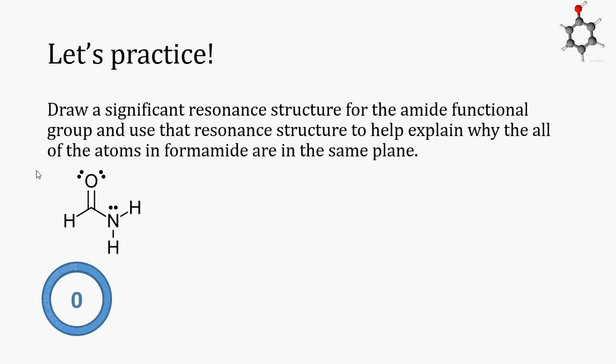First, we should get to drawing those resonance structures, like the question asked us to do. Again, we can follow the resonance patterns to draw the significant resonance structures for formamide. First, we can see that there is a carbon-oxygen double bond, and we can shift the pi bond from carbon to oxygen up onto the oxygen to become a new lone pair, leaving the oxygen with a negative formal charge and the carbon with a positive formal charge.